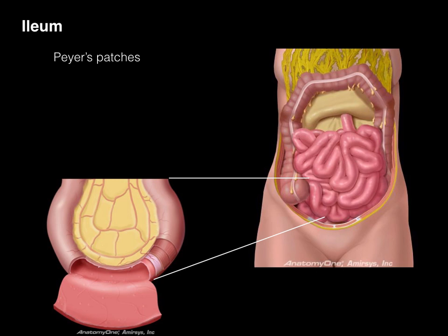Another thing that distinguishes the ileum is these dense lymphoid nodules called Peyer's patches — an aggregation of a lot of lymphatic tissue. They're rarely seen grossly but are present microscopically, and they're there to help fight infection, primarily because the next part of the bowel is the colon, which has a ton of bacteria.